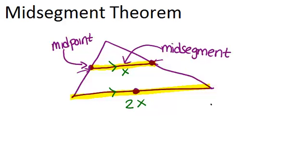So for example, if you had a triangle with one of the mid-segments drawn in, and you knew the length of the third side of the triangle was 6, that would mean that the length of the mid-segment over here must be 3, because it has to be half the length of the third side.